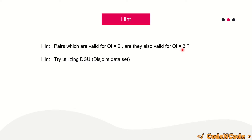For qi = 3, we only require that no edge on the path has weight greater than 3, so edges of weight 2 are fine. Any pair valid for qi = 2 will also be valid for qi = 3 or higher. So we should answer queries sorted from the lowest qi to the highest qi.